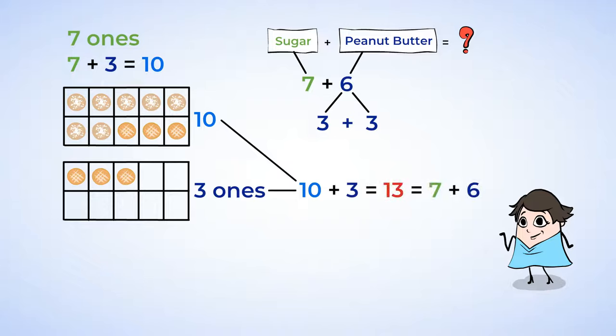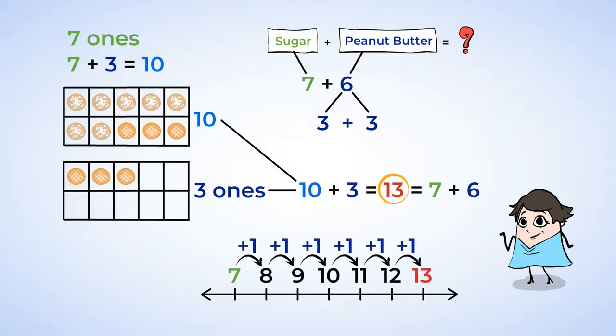So yes, 7 plus 6 is just like 10 plus 3. In both cases, they have a sum of 13. Check it out on the number line again. Start with 7 and add 6 more. This is exactly what I mean.